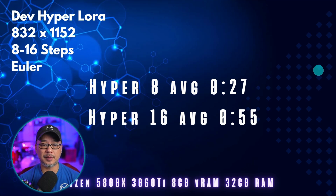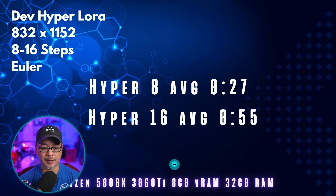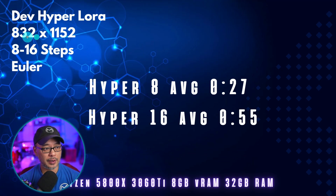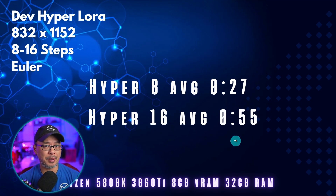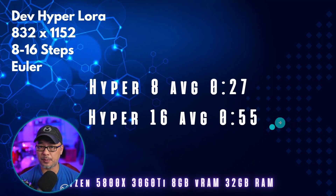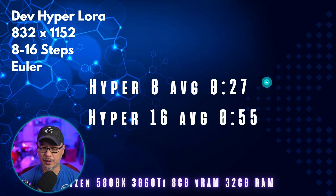In terms of speed, my setup is a Ryzen 5800X, 3060 Ti, 8 gigabytes of VRAM, and 32 gigabytes of system RAM. For 832 by 1152 I'm getting about 27 seconds on average with the 8 step, and about 155 seconds with the 16 step. For my particular setup the 16 step LoRa really isn't beneficial — I might as well use the regular dev model. But the 8 step is worth it because it cuts that time almost in half.